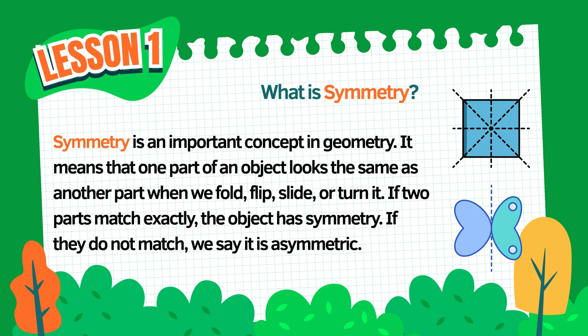Now let's compare that with objects that are asymmetric or not balanced. The letter R doesn't match on both sides. A tree with more branches on one side than the other is asymmetric. A drawing that's random or uneven won't have symmetry either. Symmetry helps us recognize patterns, balance, and structure. It's everywhere—from nature to art and even in the things we use every day.